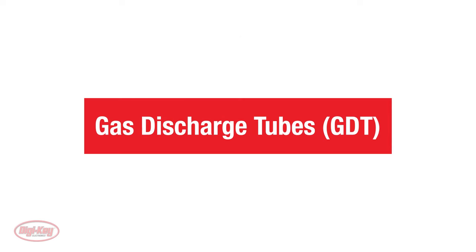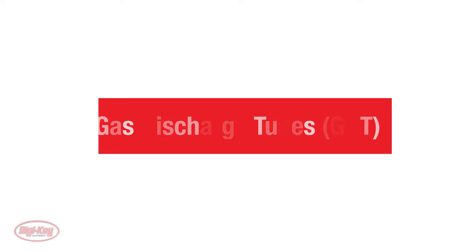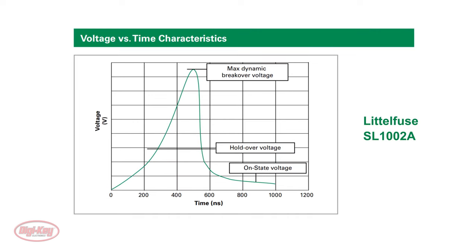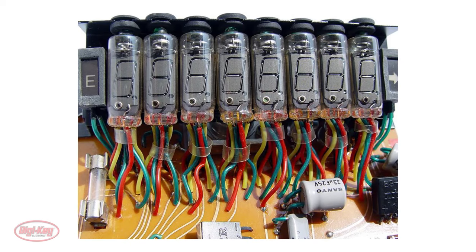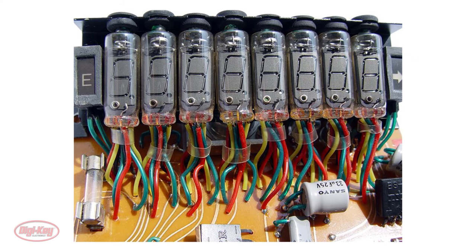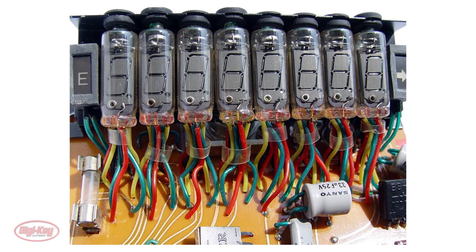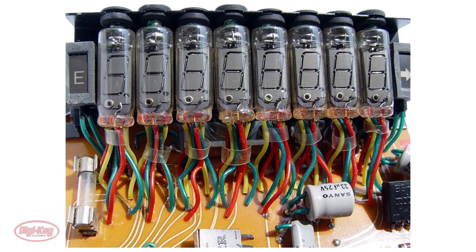Gas discharge tubes, or GDTs, are another type of transient suppressor. GDTs are tubes filled with an inert gas that ionizes at a specified voltage, forming a short to ground. In that regard, GDTs are similar to MOVs and TVS diodes, but GDTs generally have a higher surge current capability, up to 100 kA. The physical nature of GDTs also means they tend to clamp or fire slower and are commonly used with other protection devices.